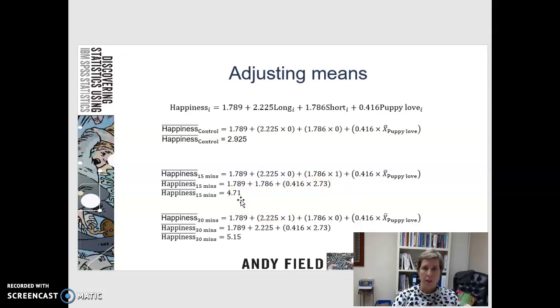So now let's look at 30 minutes. The 30-minute one is saying, I'm going to spend 30 minutes with a dog and I've got an average love of puppies of 2.73. What is my level of happiness? 5.15.